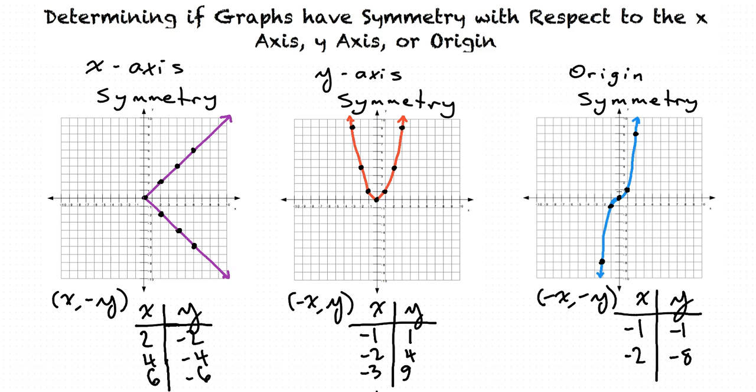Okay, I finished the points. I can see that this graph has origin symmetry because all the points are written as negative x, negative y. What's an example of a graph that has more than one or all kinds of symmetry?